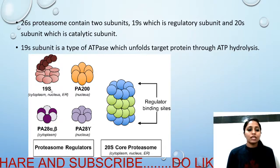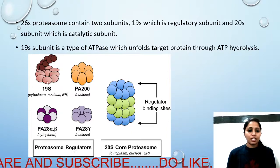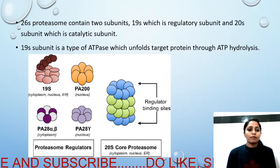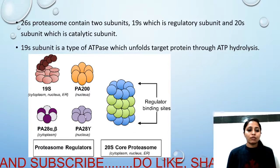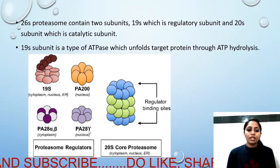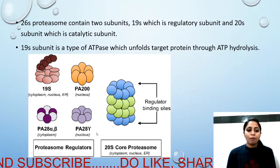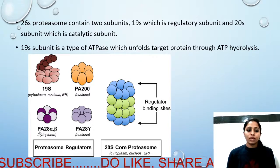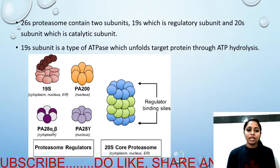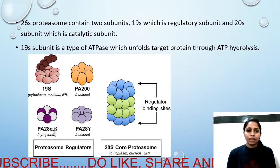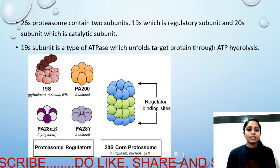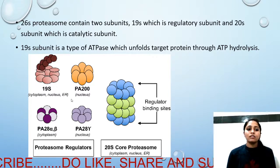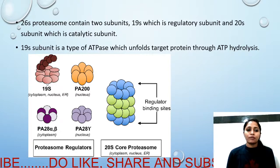There are many proteins present in the 19S subunit, such as PA200 and PA28, as well as alpha and beta subunit proteins. The 19S regulatory subunit is found in the cytosol, while the 20S core is the proteasome barrel itself.